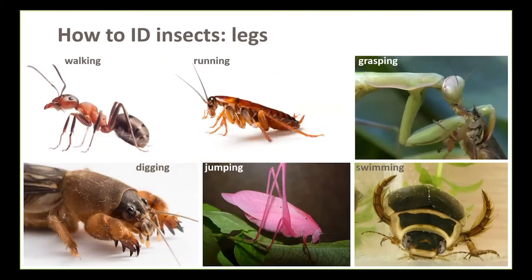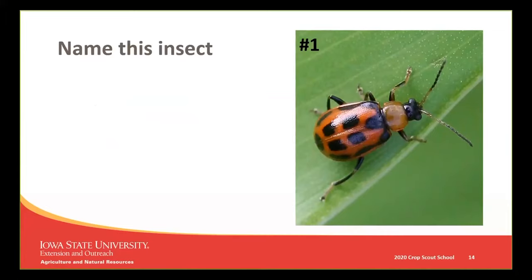There's also a lot of variation in leg types. The general setup is a plain walking leg, but we have running insects, predatory insects with grasping legs, soil-dwelling insects with shovel-like legs for moving underground, and insects with modified jumping legs like grasshoppers and potato leafhoppers. These modifications can also help when looking through field guides — that was basically a semester of undergraduate entomology in about four or five minutes.